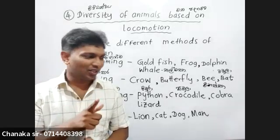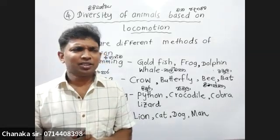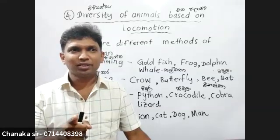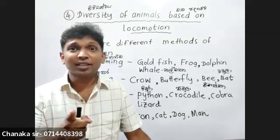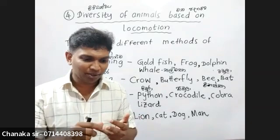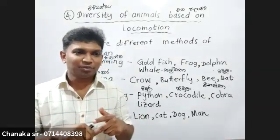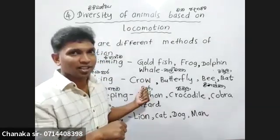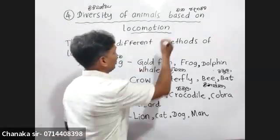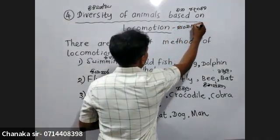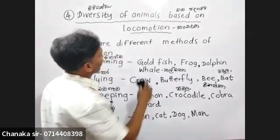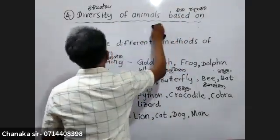We can divide animals into different ways. Another way is diversity of animals based on external features, diversity of animals based on habitat, diversity of animals based on feeding mechanism, diversity of animals based on type of food they consume, diversity of animals based on locomotion, and diversity of animals based on external features.